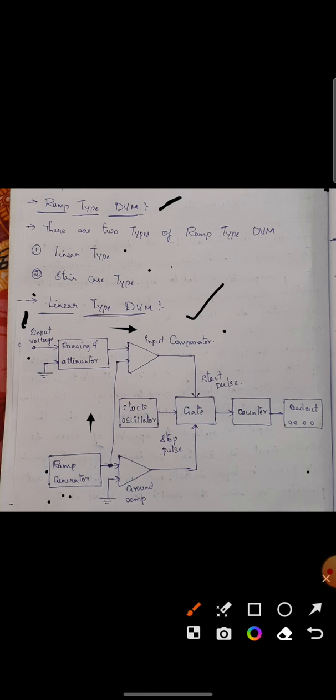The ramp generator produces the ramp signal and we have measured the value of input voltage. Here, if the value is low, it is amplified, or if high, attenuated. This circuit amplifies or attenuates and gives to the input comparator.